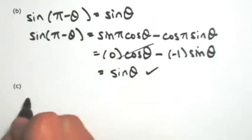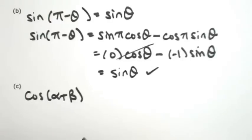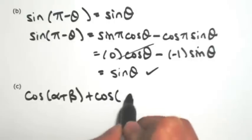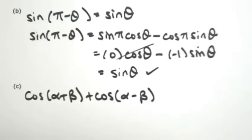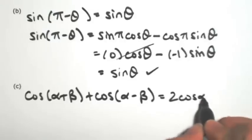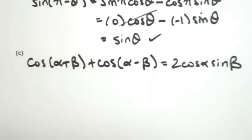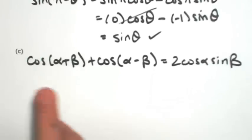Okay, one more. Let's say the cosine of alpha plus beta plus cosine of alpha minus beta. Let's show that's the same thing as 2 cosine alpha sine beta. Okay, once again, the left side has a lot more in it, so I'm going to start there.